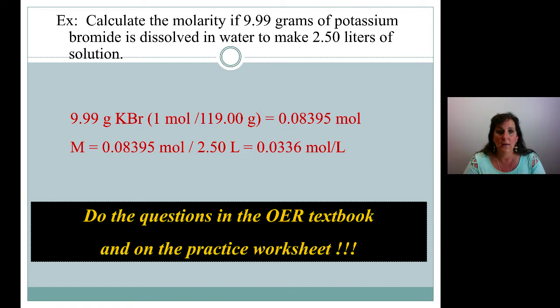Now we have our molarity, which is moles per liter. So we take our 0.08395 moles, divide by the 2.50 liters. We get our moles per liter, which is 0.0336. That's the final answer. That is the one that I round to 3 sig figs.